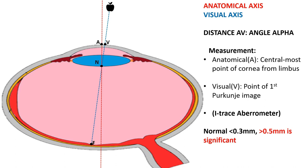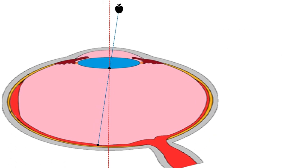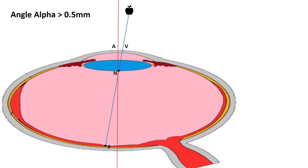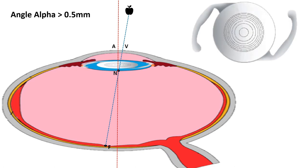Sometimes the value of angle alpha can be more than 0.5 millimeters, which can have significance in certain situations. Let us take a case example. If this patient undergoes cataract surgery with a multifocal IOL, the multifocal IOL will sit in the center of the capsular bag. The anatomical axis will pass through the center of the IOL, while the visual axis — through which the patient actually sees — will pass somewhere close to the first diffraction ring, leading to visual dissatisfaction and unwanted images.